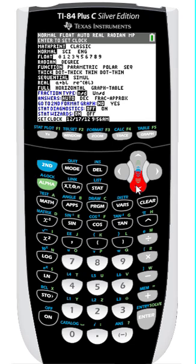I'm going to press the down arrow key to move my cursor to the Normal setting. I'll press the right arrow key once to highlight SCI, which is the scientific notation setting in the Mode menu. Notice that the cursor flashes over SCI, but Normal is still highlighted.